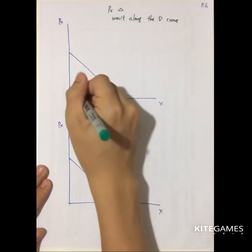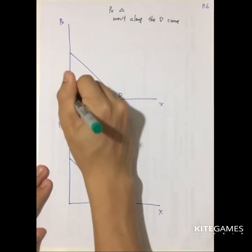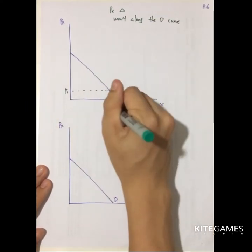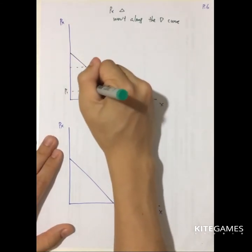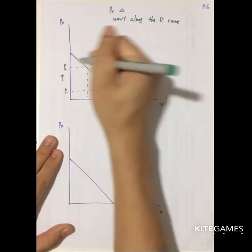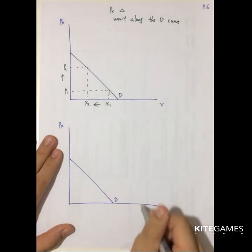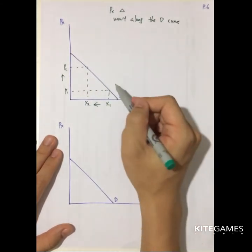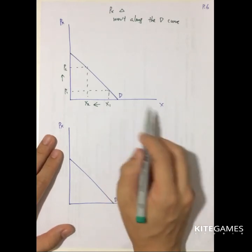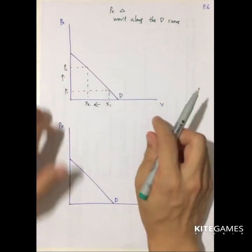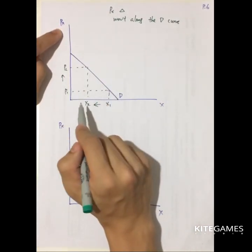For example, if the price of X increases, how do we represent that in a diagram? This is just a movement along the demand curve, because the demand curve shows the price and quantity relationship. So any change in either of those variables will lead to a movement along the curve.